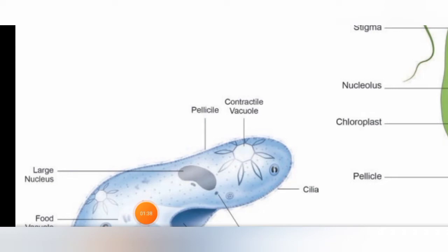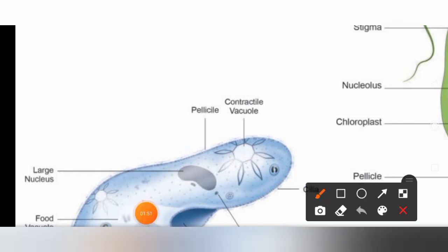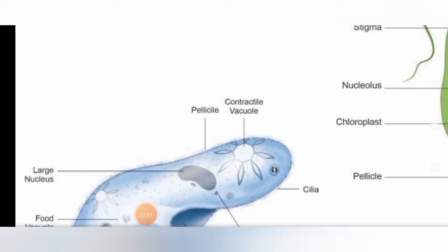Look here — this is paramecium. Paramecium is also a unicellular organism which lives in water and moves with the help of cilia. So the locomotory organ of paramecium is cilia.